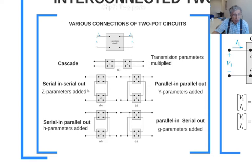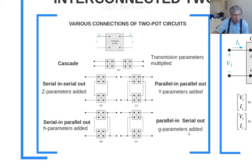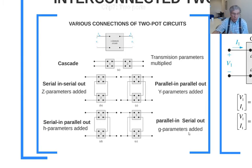Transmission parameters are used for the cascade connection, Z parameters for the series-series connection, Y parameters for the parallel-parallel connection, H parameters for one mixed connection, and G parameters for another mixed connection. Therefore, we defined those six equivalent definition relations. That is the end of this chapter and also the final video of this course.